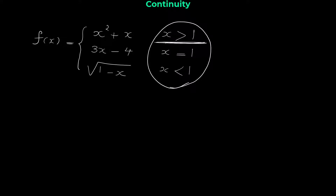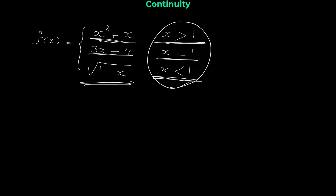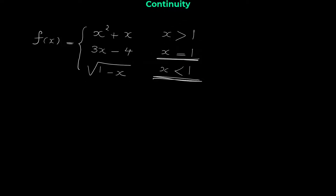When x is greater than 1 we have one rule, when x equals 1 we have another rule, and when x is less than 1 we have another rule. So for different values of x we have different equations. What we want to do is check if this given function is continuous at 1 or not.